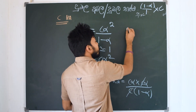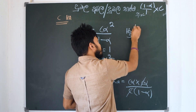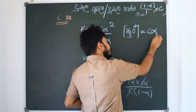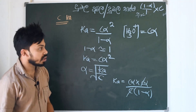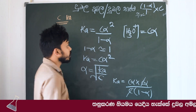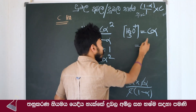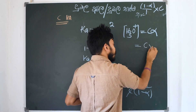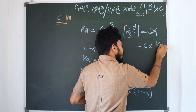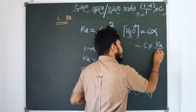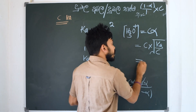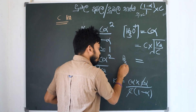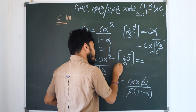We can see that [H3O+] = C·alpha. C·alpha is the same. So [H3O+] = C·alpha, and Ka = C·alpha².